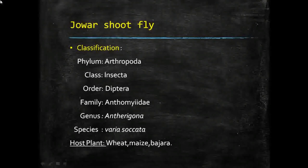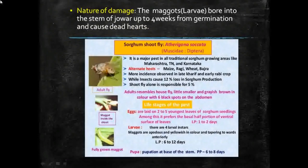The other host plants on which it is found or infests are wheat, maize, and bajra. Moving to the nature of damage, the maggots or larvae bore into the stem of Jowar up to four weeks from germination and cause dead hearts.